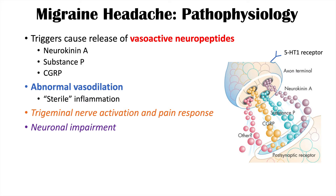Along with this, there may also be some neuronal impairment. The release of these vasoactive neuropeptides appears to be related to 5-HT1 receptor activity — that is, serotonin receptor activity. There are many different serotonin receptors, but here we generalize with the 5-HT1 receptor.